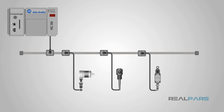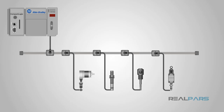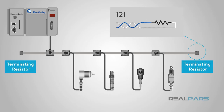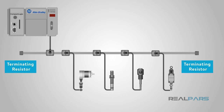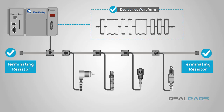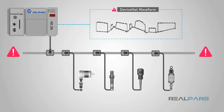Since there are no predetermined cord lengths, you can put connections to the flat cable anywhere on the line, making it great for device placement. The trunk line requires a 121-ohm, 1%, 0.25-watt or larger terminating resistor at each end of the trunk, connected directly across the signal wires — blue and white. The terminating resistors reduce electrical noise, and without them in their correct place, the DeviceNet will not work properly.